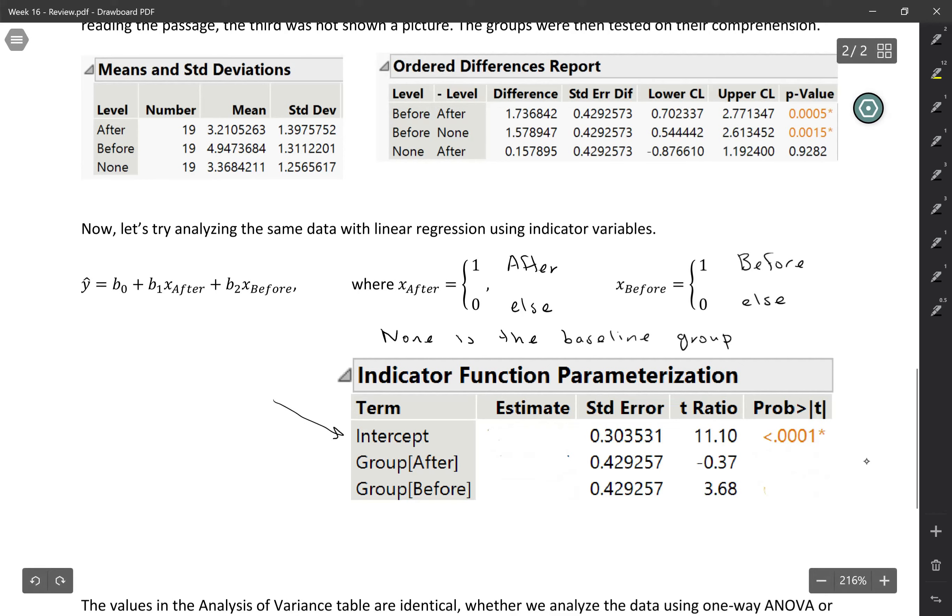All right, so let's start with the intercept. So the interpretation of the intercept is that it would be the predicted value of y when all of your x's are equal to 0. So what it means to have all of the x's equal to 0 in this case is that we're talking about the baseline group, right? Because if all the indicators are equal to 0, then that would refer to the baseline. So what would our predicted value be for the baseline? We can just look up here at the means and see that for the none group, the average would be 3.368. That's the average comprehension score. So that would be our intercept.